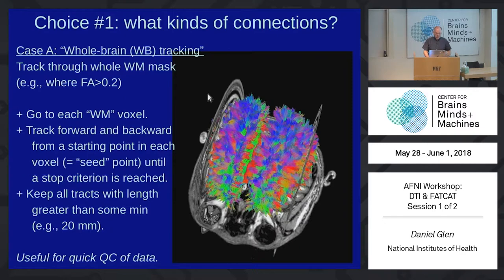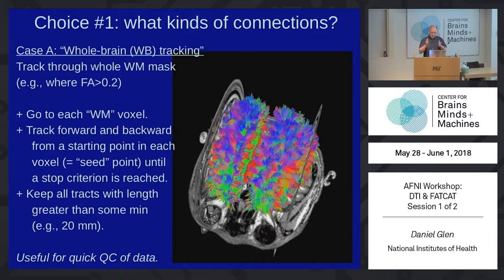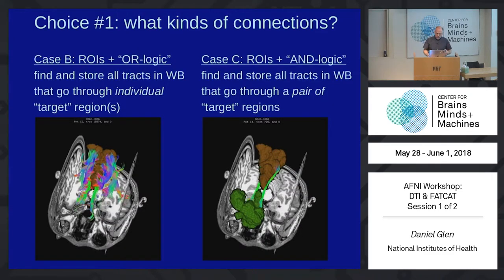We can do tractography through the whole brain using that algorithm. We go to every white matter voxel, starting at fractional anisotropy of at least 0.2, and ending when voxels are also at least 0.2. We also look for bending of a certain amount and a minimum length. We overseed — doing more than one tract per voxel. We can add that we want tracts that go from one region to another region — that would be AND logic. Or we can have tracts that go between either region — that would be OR logic — and remove all other tracts.